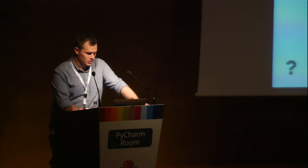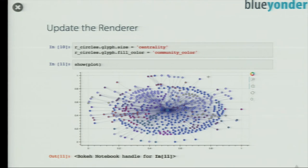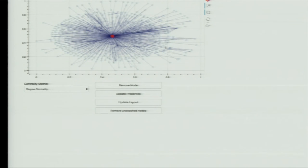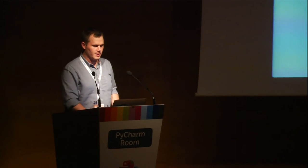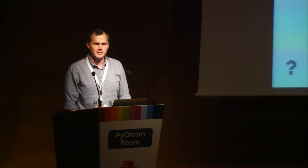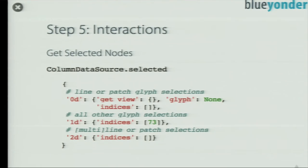I want to click on a node here. This is a little buggy because it's a slideshow — normally it works in notebooks too. You can go here, click on something, mark it, and then remove it. I want to remove it because it's a bad data point. I want to do some recalculation. What I can do is interactions — I can get from the ColumnDataSource which nodes are selected. It's a bit of a tricky data structure: you have 0D, 1D, and 2D. 0D is for lines and patches, all other glyphs like circles are in the 1D key, and 2D has multi-line drawings. So we use the 1D key to get the indices of all marked nodes currently in our plot.